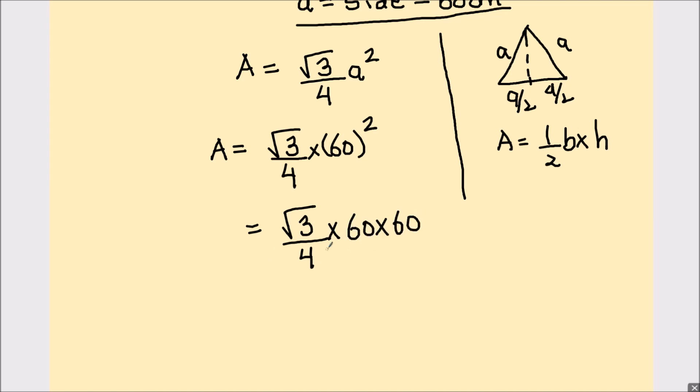This can be reduced and 4 times 1 is 4 and 4 times 15 is 60. So area comes out to be root 3 times 15 times 60 which equals 1558.84 centimeters squared.